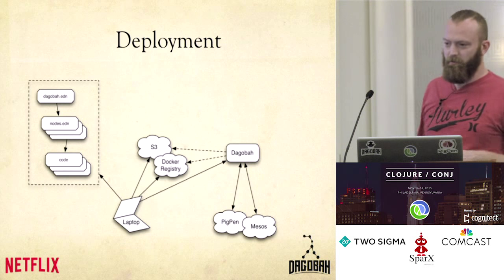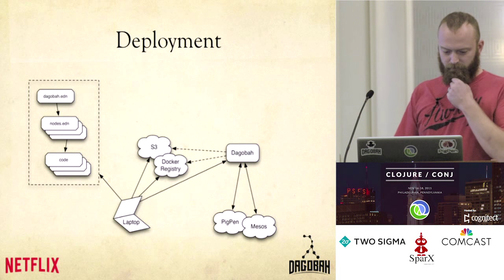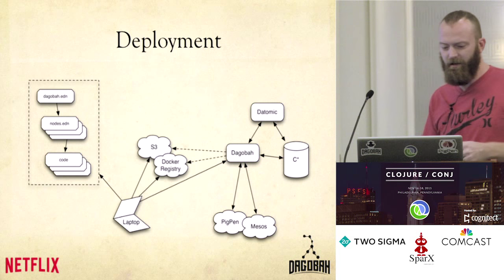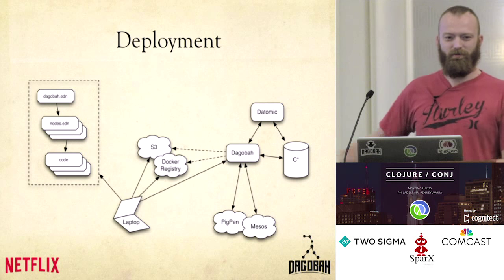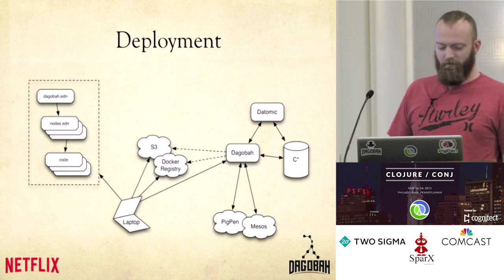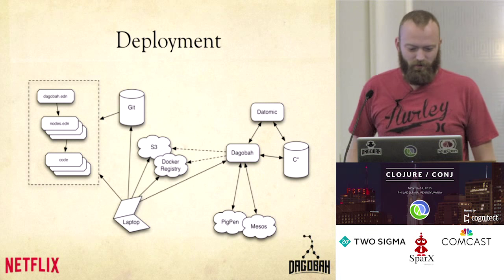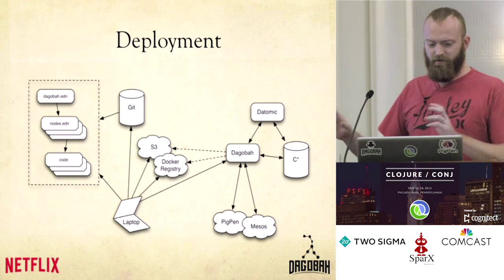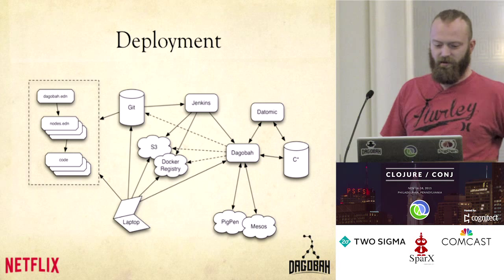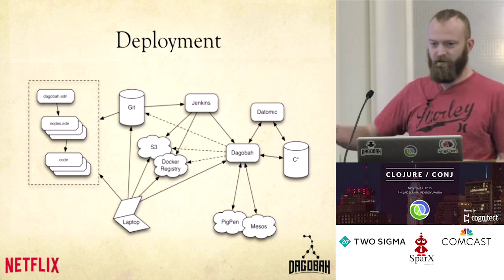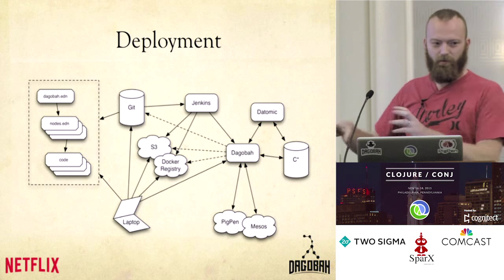You could ask it and say go build me one of these nodes. Dagobah is going to farm the actual work off to other systems to run a Pigpen job or run this Docker image on a Mesos cluster somewhere. Under the hood, Dagobah is storing all of this information in Datomic — we use Cassandra under that. And because you're probably a sane person, you don't keep all your code only on your laptop. We actually put it into Git, have some sort of repo, check in our code, check in these nodes and the dagobah.edn file along with our code. Now we can set up an automated build job — we use Jenkins to say anytime I change something in Git, go ahead and build this, push the artifacts out there and tell Dagobah where it is.